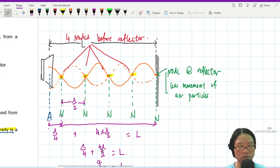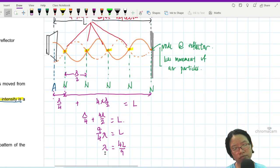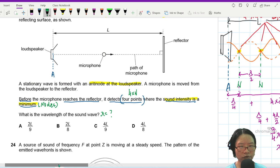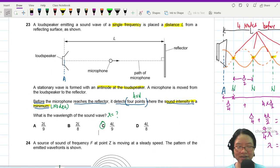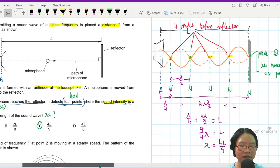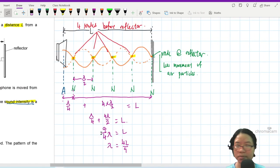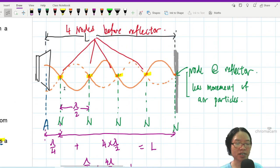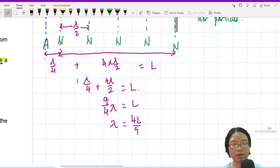So the answer is 4L over 9. Is there an answer? Yes, there is 4L over 9. So if you know that, you don't need to sketch this. But at least a useful thing to remember is node to node, lambda over 2. And then you can just count how many lambda over 2s there are and equate them to L. And then you can find lambda, equate them to L. And you can find lambda in terms of L. All right. That's it for this question.